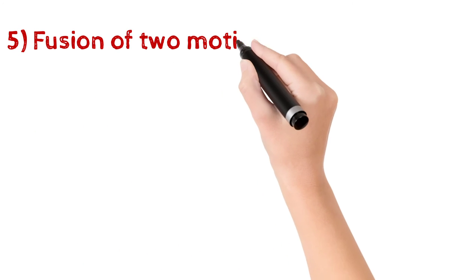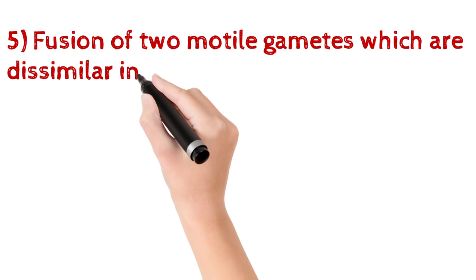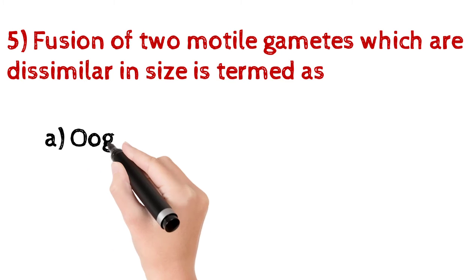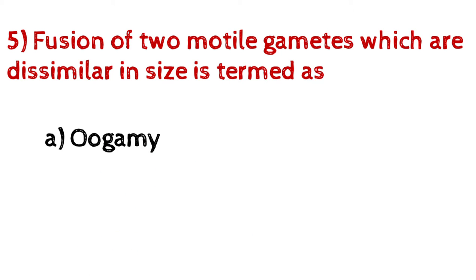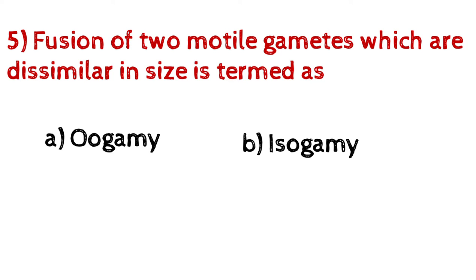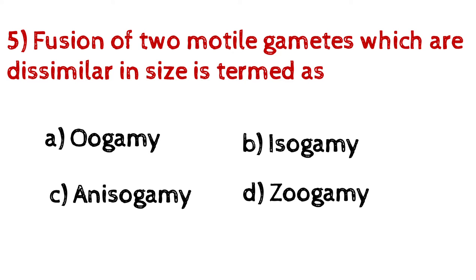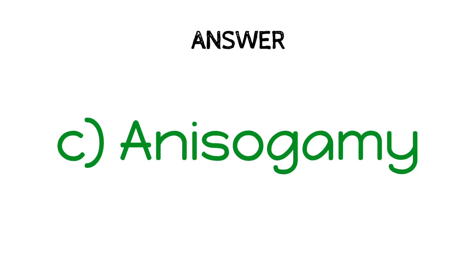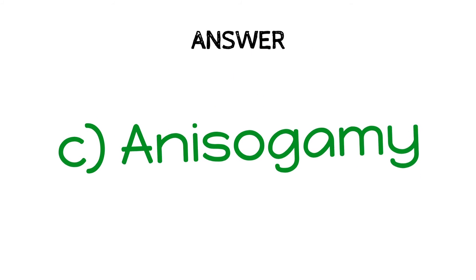Question number five: fusion of two motile gametes which are dissimilar in size is termed as — A) Oogamy, B) Isogamy, C) Anisogamy, D) Zoogamy. And the answer is C) Anisogamy.